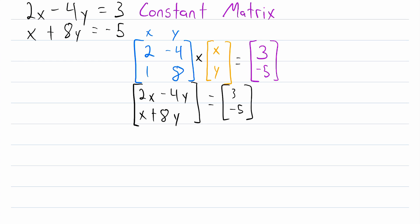Maybe you don't want to use three matrices to represent a system of linear equations. You might think: if each column of the coefficient matrix is dedicated to a specific variable, then we don't really need another matrix to represent the variables. You also might think, why do we need to put the constants in a different matrix? Why can't we put all of this information into one matrix? Well, of course we can, and that's very useful. To represent this system of linear equations using one matrix, we use what's called an augmented matrix. An augmented matrix is just created by joining the columns of two separate matrices.